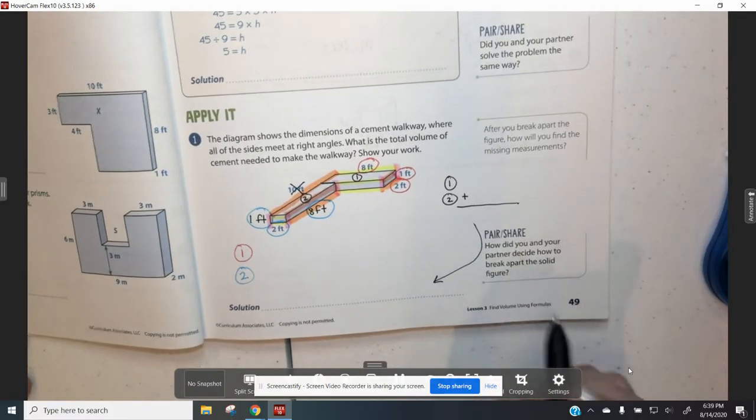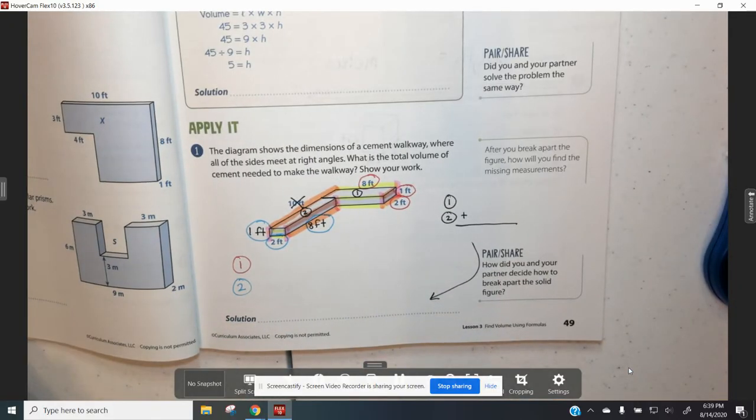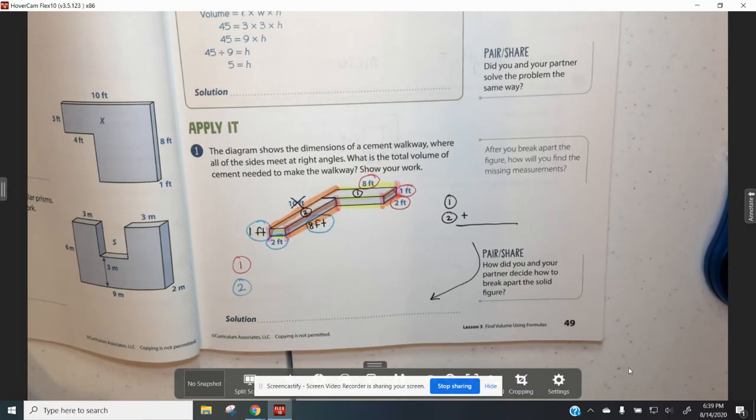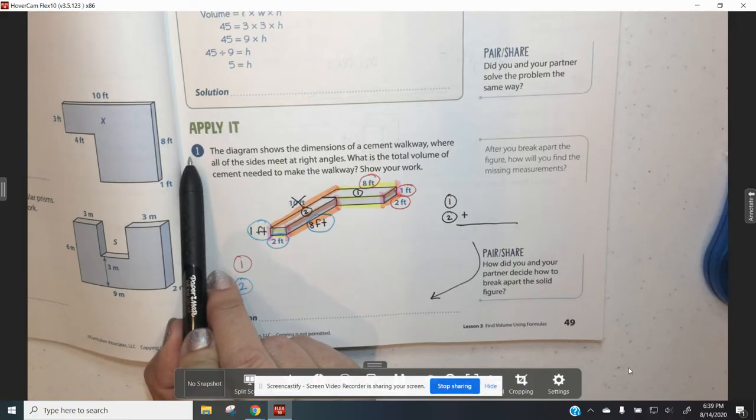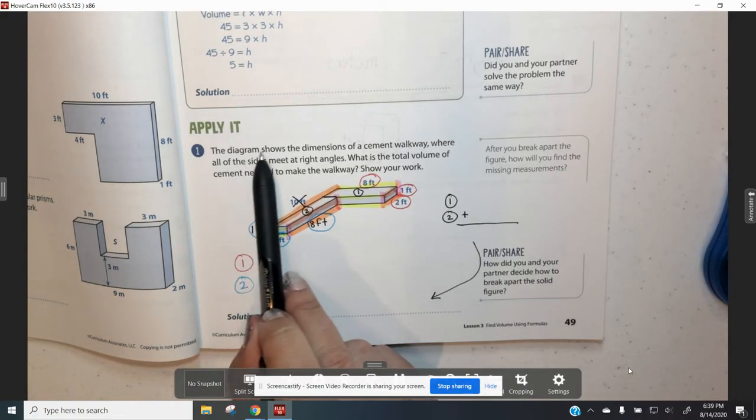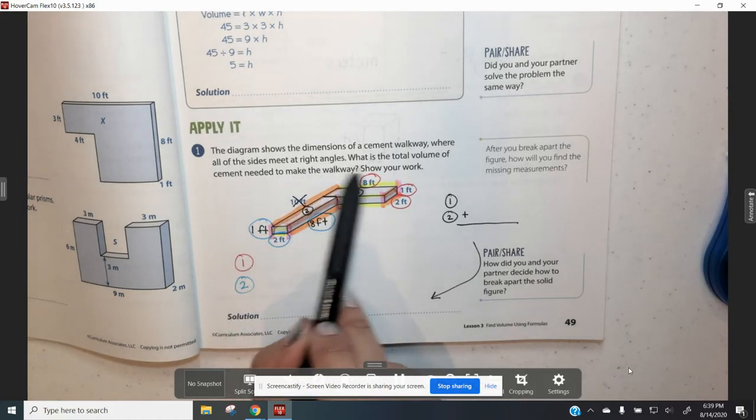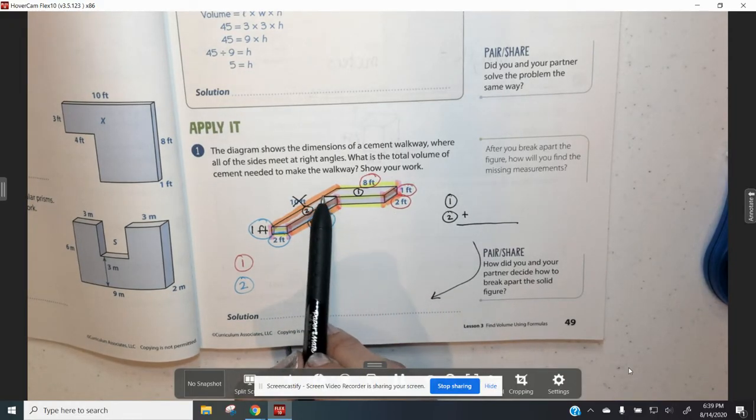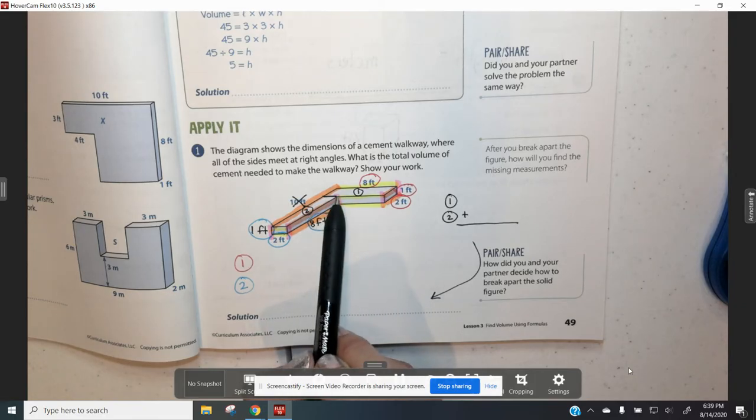We're going to start with number 1 on page 49. On each of these questions, you may want to pause it and write the notes into your workbook so that it's a little bit easier for you to do. I tried to give you a little bit of help to make the problems easier for you to digest. The diagram shows the dimensions of a cement walkway where all the sides meet at right angles. What is the total volume of cement needed to make the walkway?